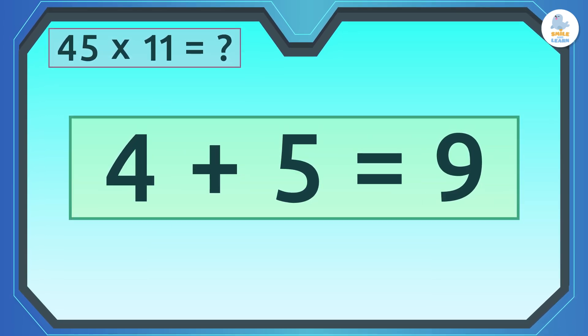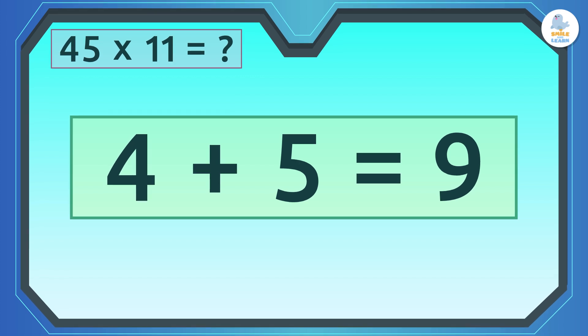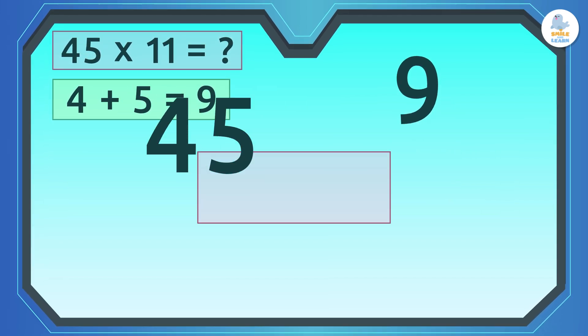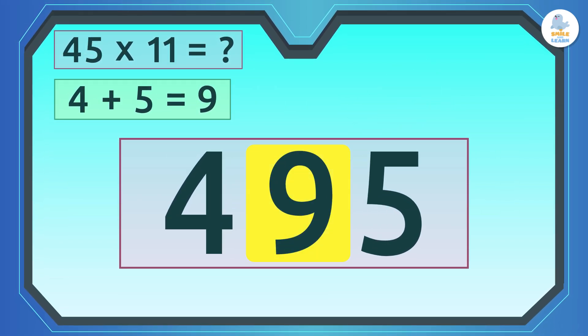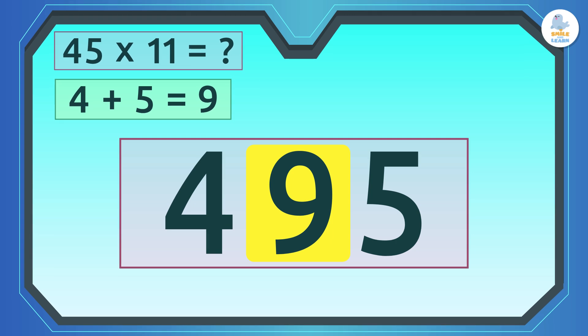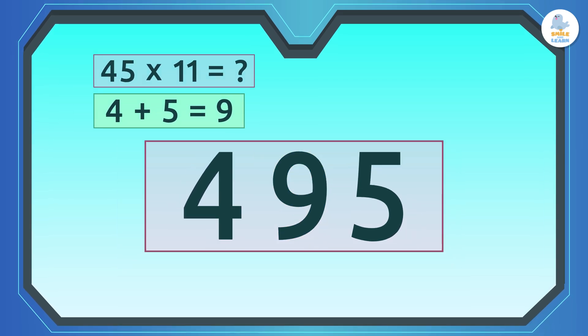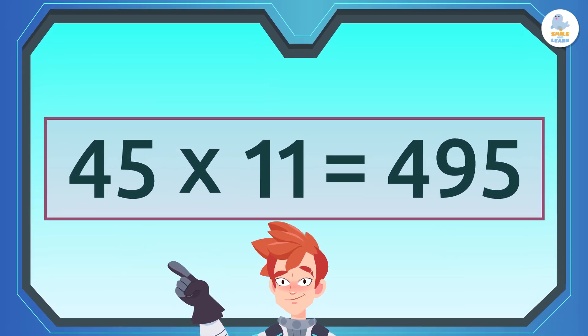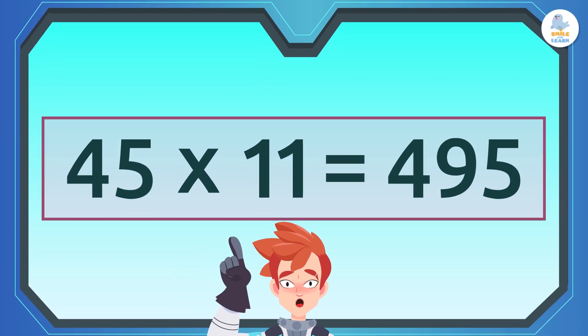Then, we add those two digits. 4 plus 5 equals 9. Finally, we put that number between the two original ones. So, 45 times 11 is 495.